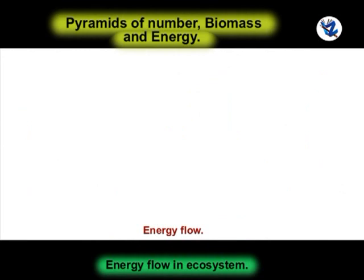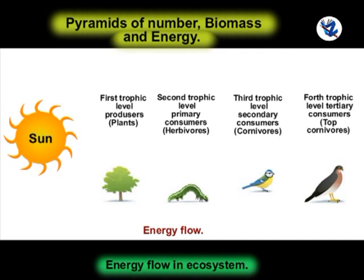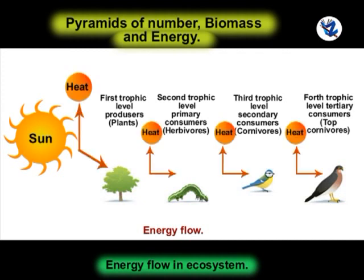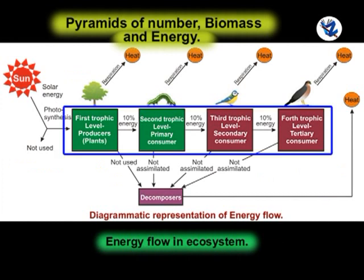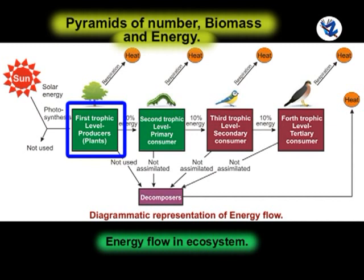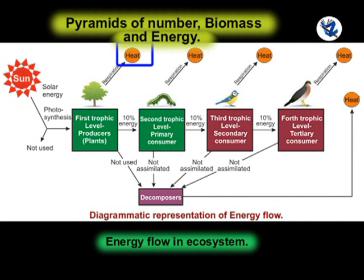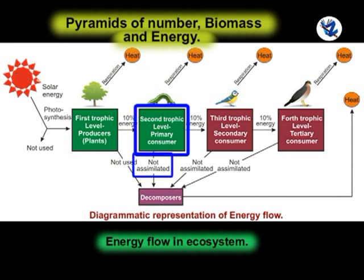Energy flow in an ecosystem is unidirectional. Energy captured by autotrophs does not go back to solar input, and energy which passes to herbivores does not go back to autotrophs. The amount of energy flow decreases with successive trophic levels. Producers capture 1–5% of the photosynthetically active radiation, and remaining unutilized energy is released as heat. A small portion is utilized for respiration of producers, and about 10% of net primary production is used to provide food for herbivores. The unutilized net primary production is ultimately added to detritus as energy for detritivores and decomposers.